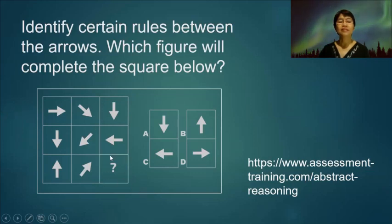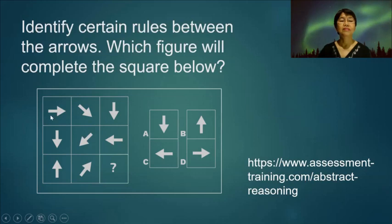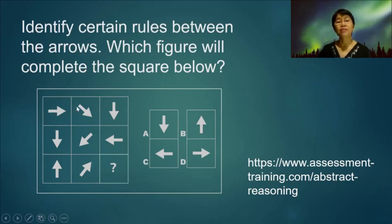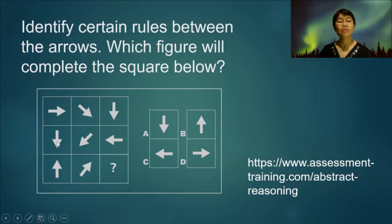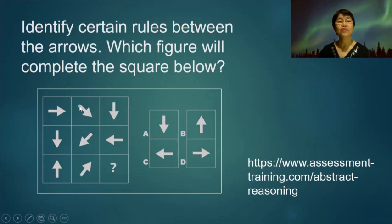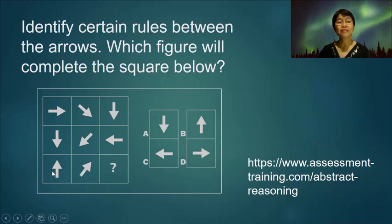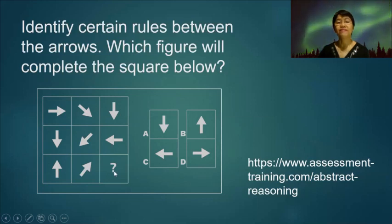Can you identify the rules between the arrows? What is the position of the arrow in the missing figure? If we observe the first row, the arrow is moving in a clockwise manner. In the second row it is also moving in a clockwise direction, and each time it moves 45 degrees. So we expect that in the third row it will also be moving clockwise and will move 45 degrees. The answer is letter D.